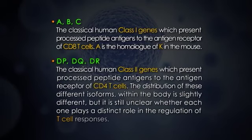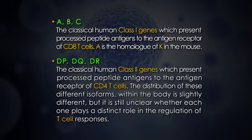HLA-DP, -DQ, and -DR are the classical human class 2 genes which present processed peptide antigens to the antigen receptor of CD4 T cells. The distribution of these different isoforms within the body is slightly different, but it is still unclear whether each one plays a distinct role in the regulation of T cell responses.